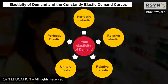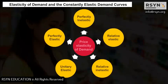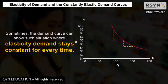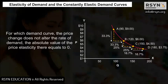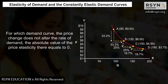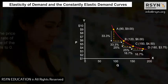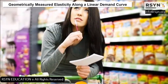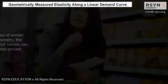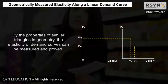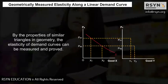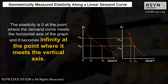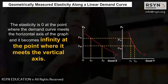Different price elasticities at different points can be shown through a linear demand curve. Sometimes the demand curve shows a situation where elasticity stays constant throughout — for which the price change does not alter the rate of demand, and the absolute value of price elasticity equals zero. Thus, the vertical demand curve is absolutely inelastic. By the properties of similar triangles in geometry, the elasticity of demand curves can be measured and proved. Elasticity is zero where the demand curve meets the horizontal axis and becomes infinity where it meets the vertical axis.